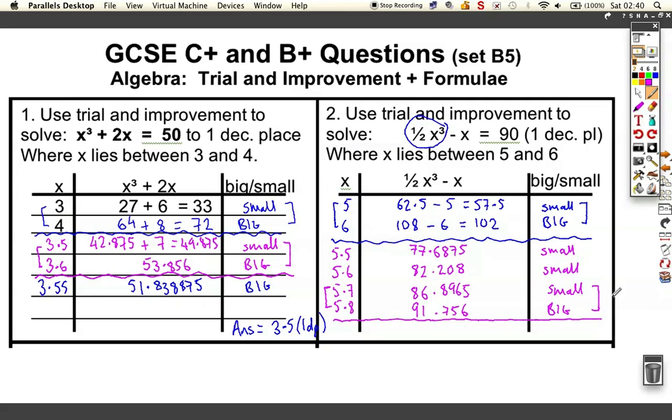What I've done is I've sandwiched the answer between 5.7 and 5.8. I'm just going to draw a line underneath it, wrap it up in cling film. I know the answer's between. Now I have to try the next one. I have to go to two decimal places, I have to go 5.75 to find out which one of these two is the right answer. 5.75³, half the answer, minus 5.75 = 89.3046875, just too small.